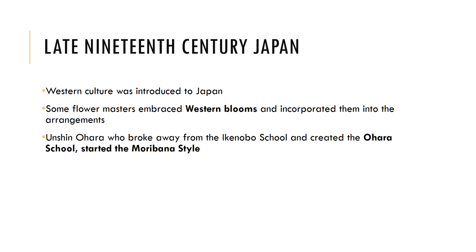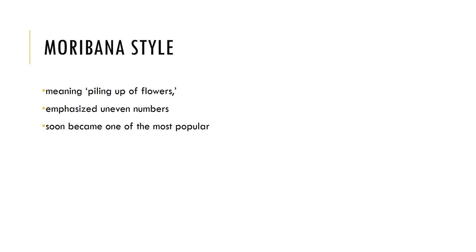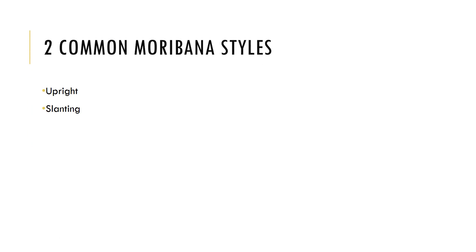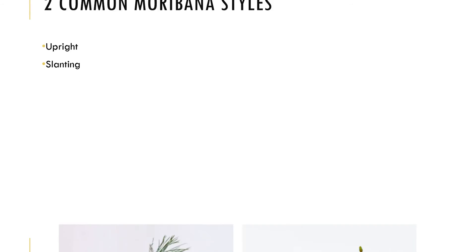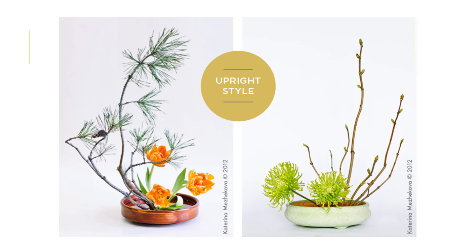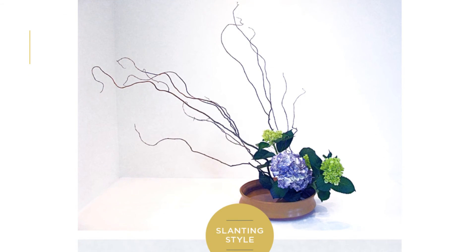In the late 19th century, western culture was introduced to Japan, and western flowers became known to the Japanese. This was also when the Ohara school was created and started the moribana style. Moribana means 'piling up of flowers' and emphasizes uneven or odd numbers, becoming the most popular among all Japanese ikebana styles. The two common moribana styles are the upright style, where plant material is placed in an upright position, and the slanting style, where it is placed diagonally.